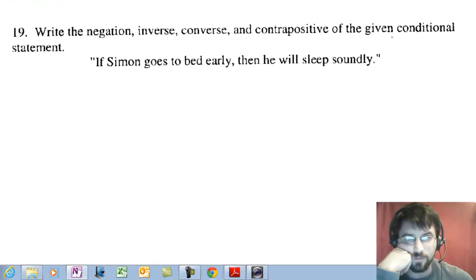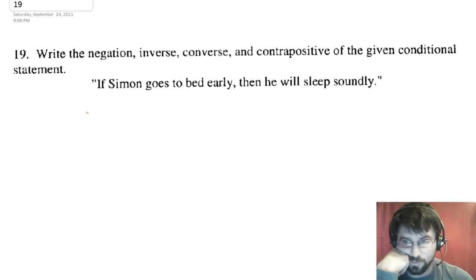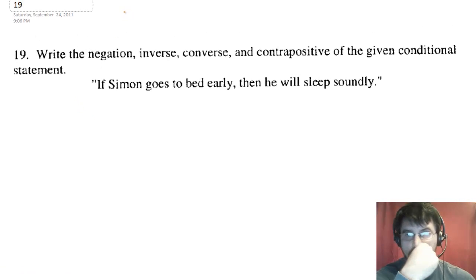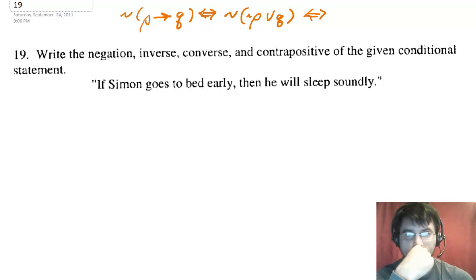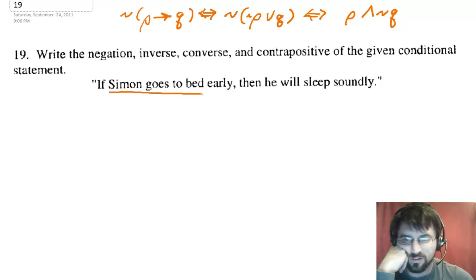Read the negation, inverse, converse, and contrapositive of the given conditional statement. Well, here it is. It says, if Simon goes to bed early, then he will sleep soundly. So the negation of that would be, let's see, you have to review the negation. If P then Q, the negation is P and not Q. So that's a good thing to know. That's P. That's Q.